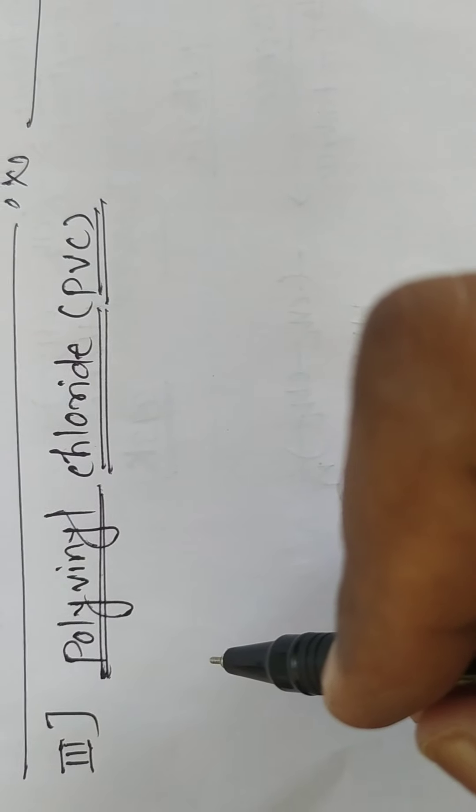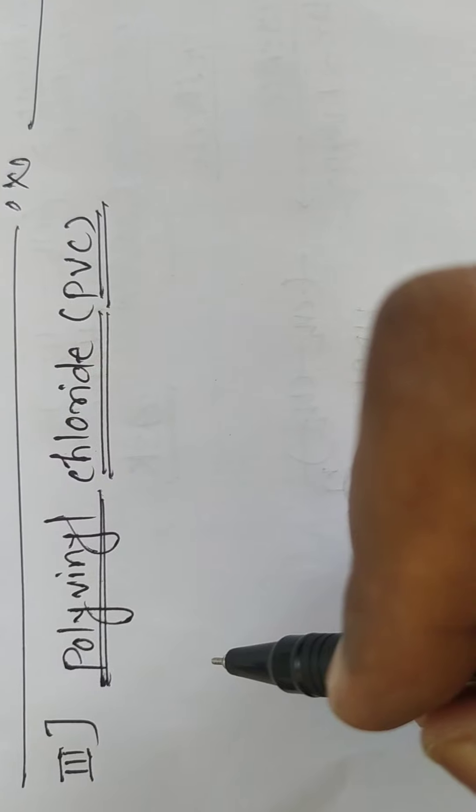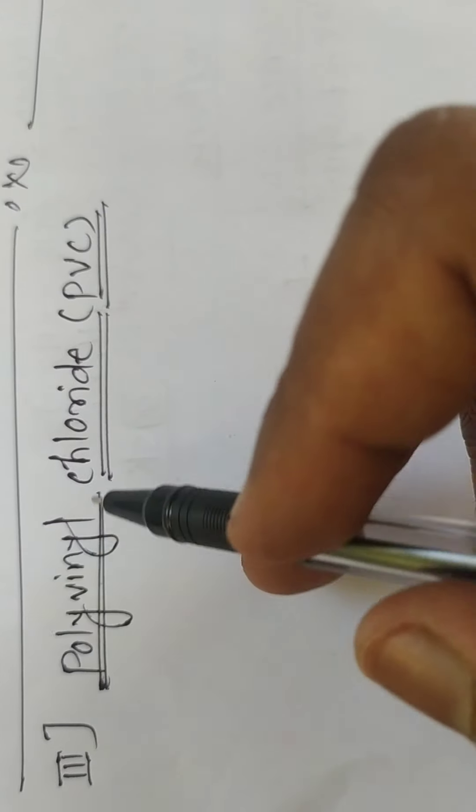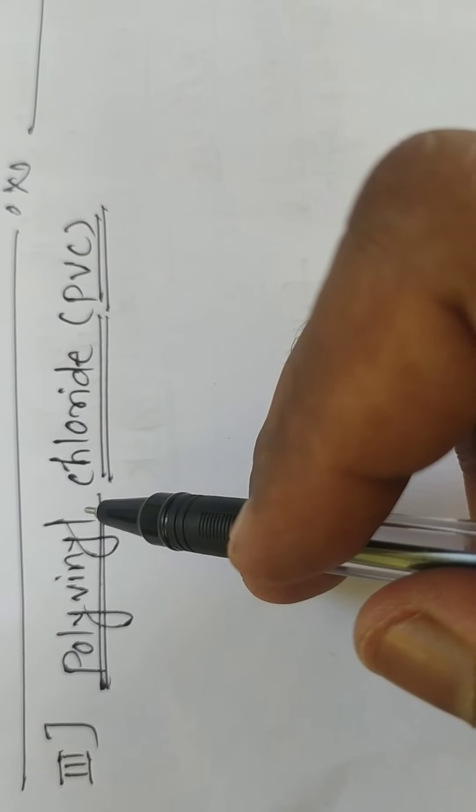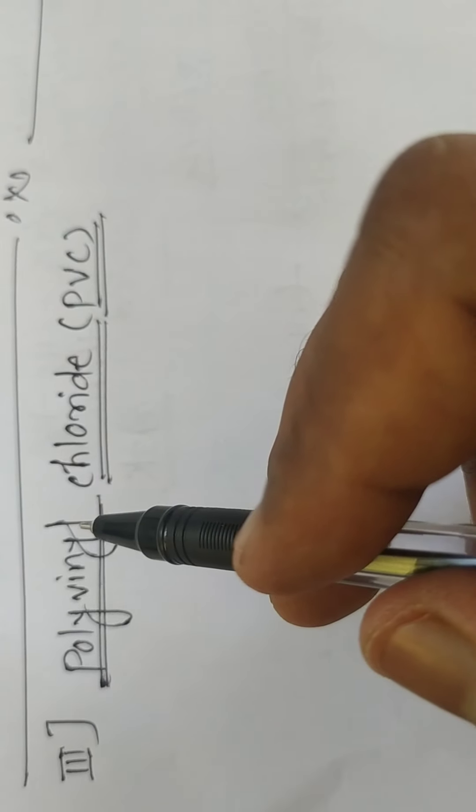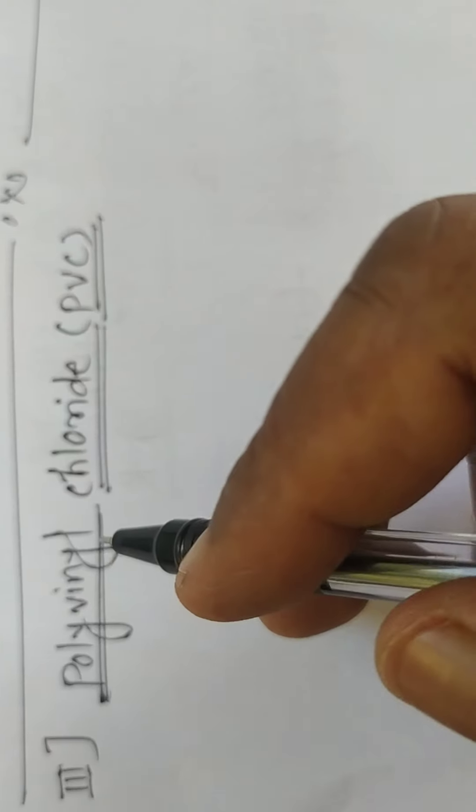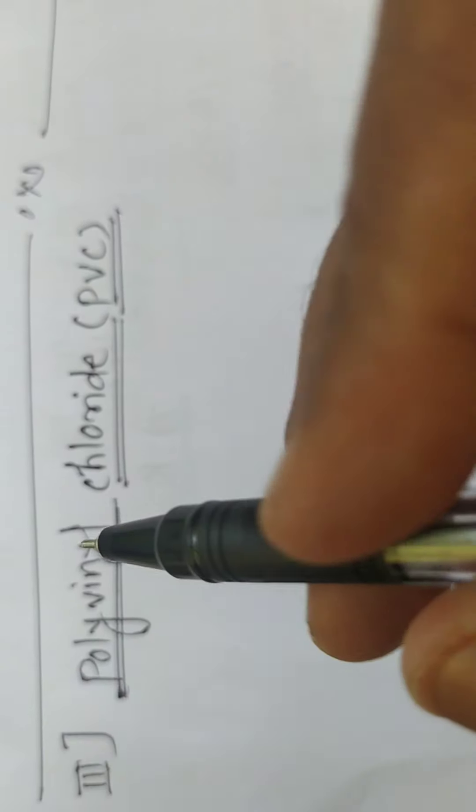Hi friends, today we are going to discuss synthesis and uses of polyvinyl chloride. This polyvinyl chloride is an addition type polymer. The monomer used is vinyl chloride, which is prepared by cracking of ethylene dichloride in vapor phase or reacting acetylene with hydrogen chloride in presence of a catalyst.